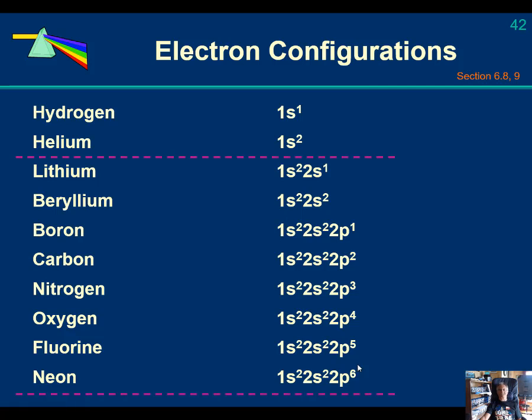And then we're going to finally fill up the n equals 2 electron shell with neon, 1s2 2s2 2p6. Notice we have filled shells for the 1s shell and filled shells for the n equals 2.